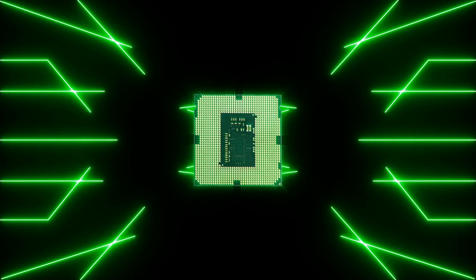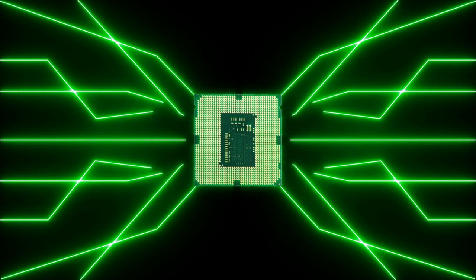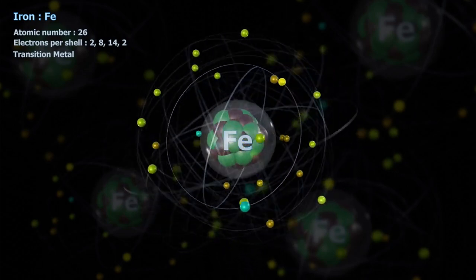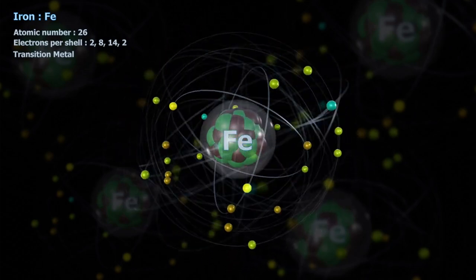In most materials, the magnetic fields of electrons point in random directions, canceling each other out. But in magnetic materials like iron, many of these electrons' spins align in the same direction, creating a stronger overall magnetic field.